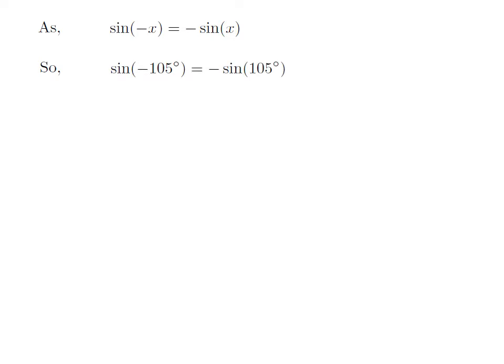Let us apply the above identity for sine of minus 105 degrees. Here, x is 105 degrees. So sin(-105°) = -sin(105°).